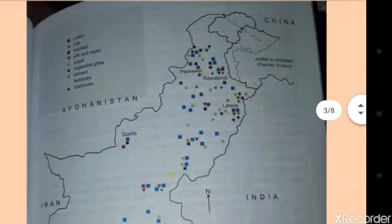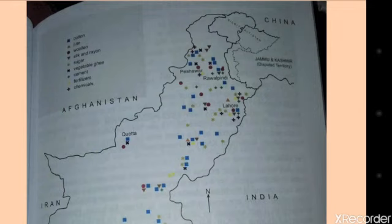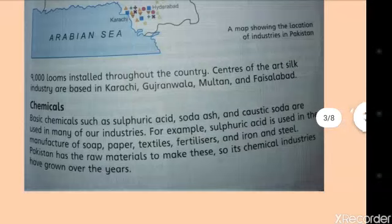Here on this map you can see different important cities of Pakistan where different industries are found. Industries are shown with different colors — blue, green, yellow, brown, red, etc. This map shows the location of industries in Pakistan.